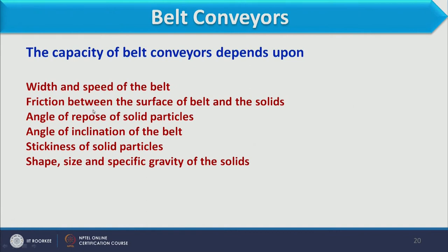The capacity of a belt conveyor depends on many factors: width and speed of the belt, friction between belt surface and solids, and the angle of repose of the solid material. The angle of repose is the angle that a pile of granular material makes with the horizontal—if material is placed on the belt, it forms a conical structure, and the angle from the horizontal to the slope of that cone is the angle of repose.